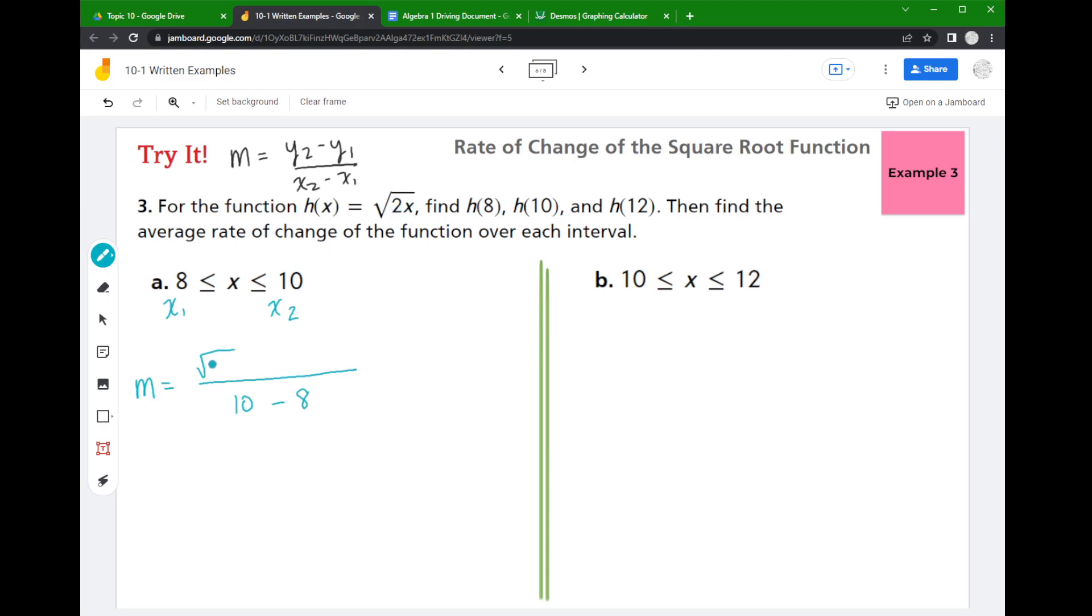So when I go to get my y values, I'm going to plug these x values into my function. So x2 was 10, so I'm going to have the square root of 2 times 10. And then my x1 value is 8, so for y1 I'm going to get 2 times 8.